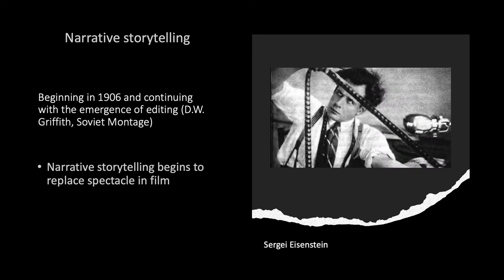Narrative storytelling. Beginning in 1906 and continuing with the emergence of editing, filmmakers like D.W. Griffith and styles of editing like Soviet Montage — there's a picture of Sergei Eisenstein on the right — allow narrative storytelling to begin to replace spectacle in film.